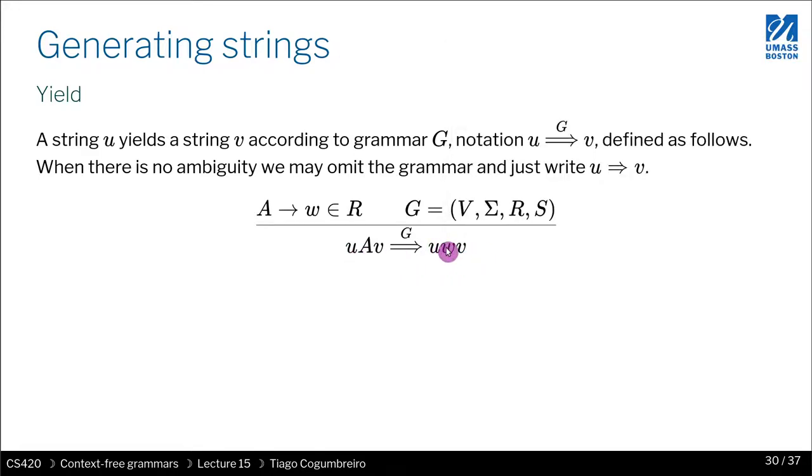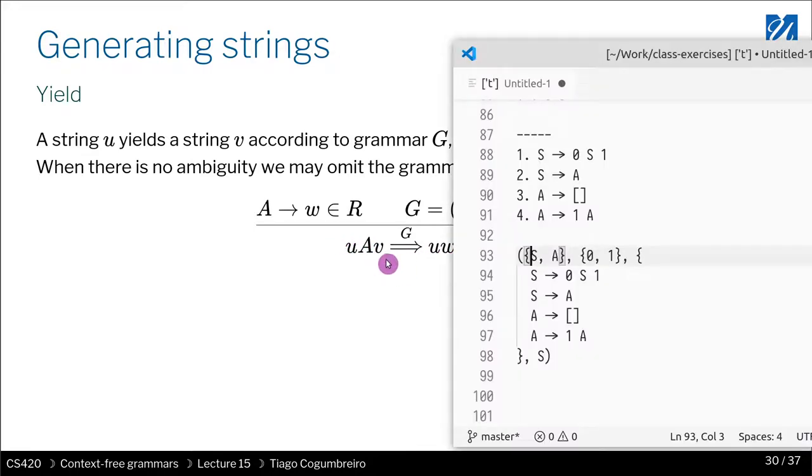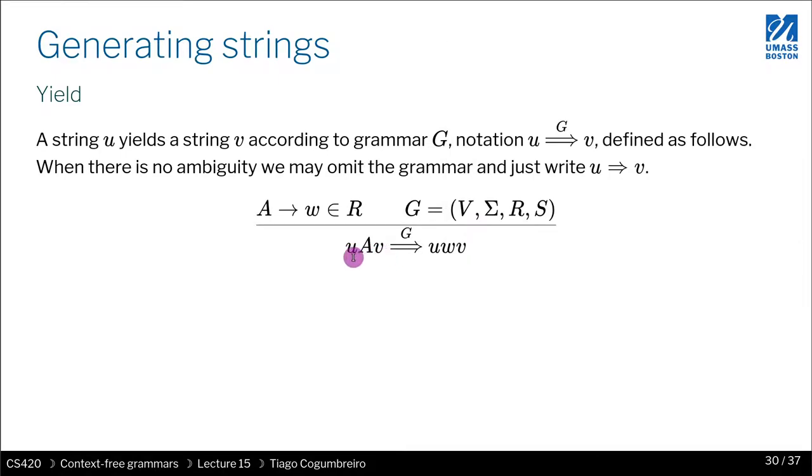Either of these, u, w, and v, they're all strings, right? And then what we need to show is we can partition whatever string we have into three parts where we have u concatenated with a variable A concatenated with a string v. And we need to find a rule that yields some string w, a rule that produces some string w.